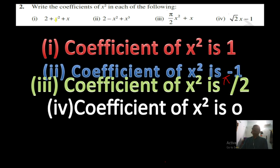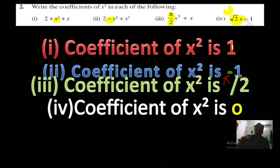Now I am showing you all the answers. The coefficient of x² in the first problem is 1. In the second question, the coefficient of x² is minus 1. The third question has coefficient 5/2, meaning 5/2 is associated with x². The last one — the x² term is absent, so the coefficient is zero. That is the answer as I have explained.